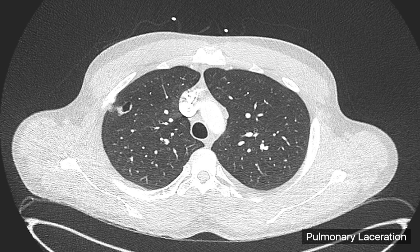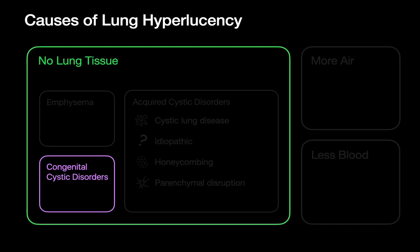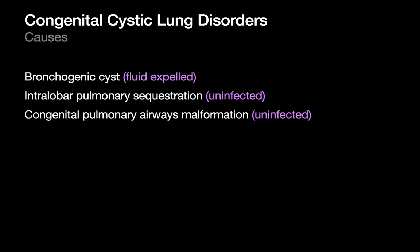Moving on to congenital cystic disorders, there are basically three disorders that could result in a lucent-looking lung region: bronchogenic cysts once the fluid has left, uninfected intralobar pulmonary sequestrations, and uninfected CPAMs.